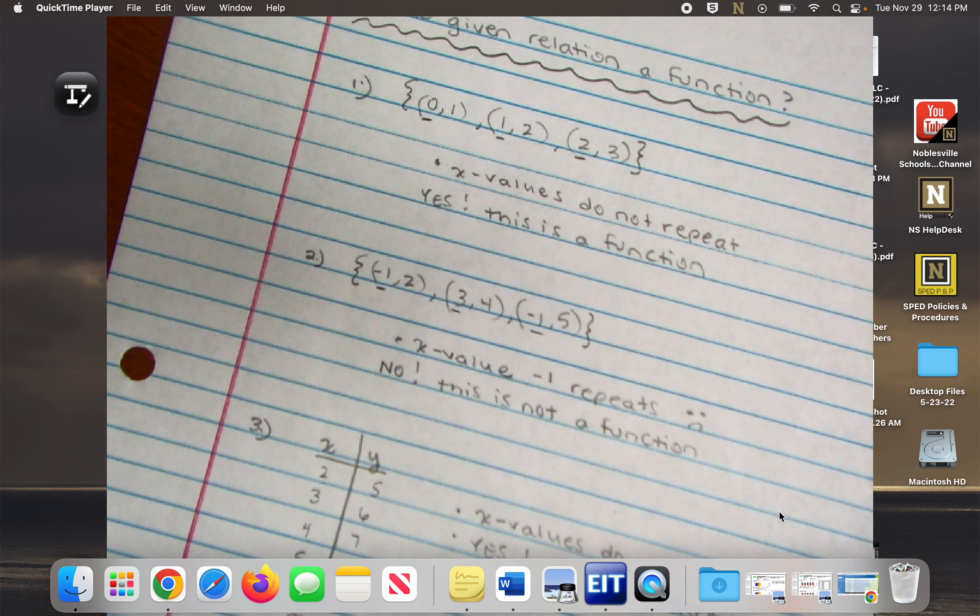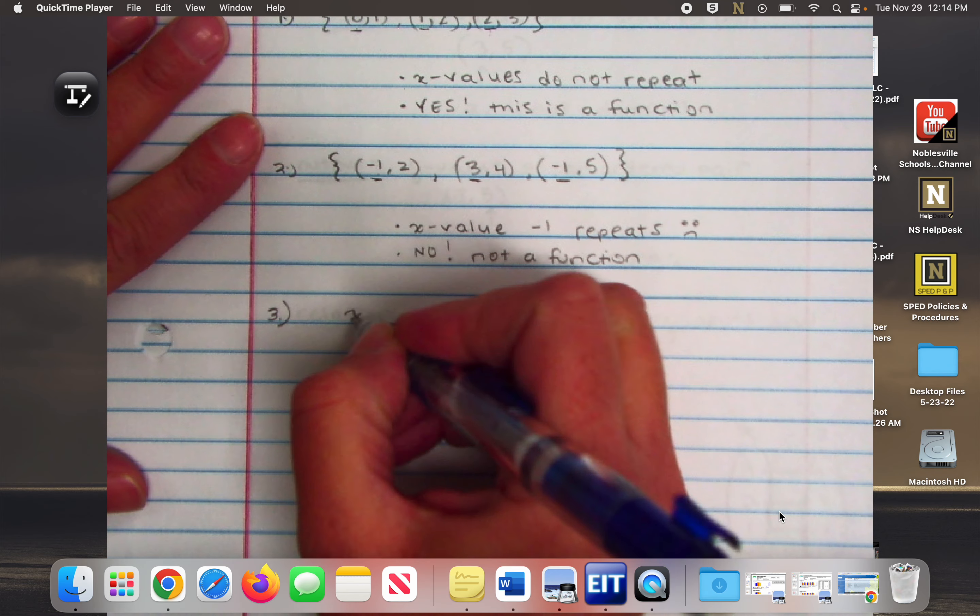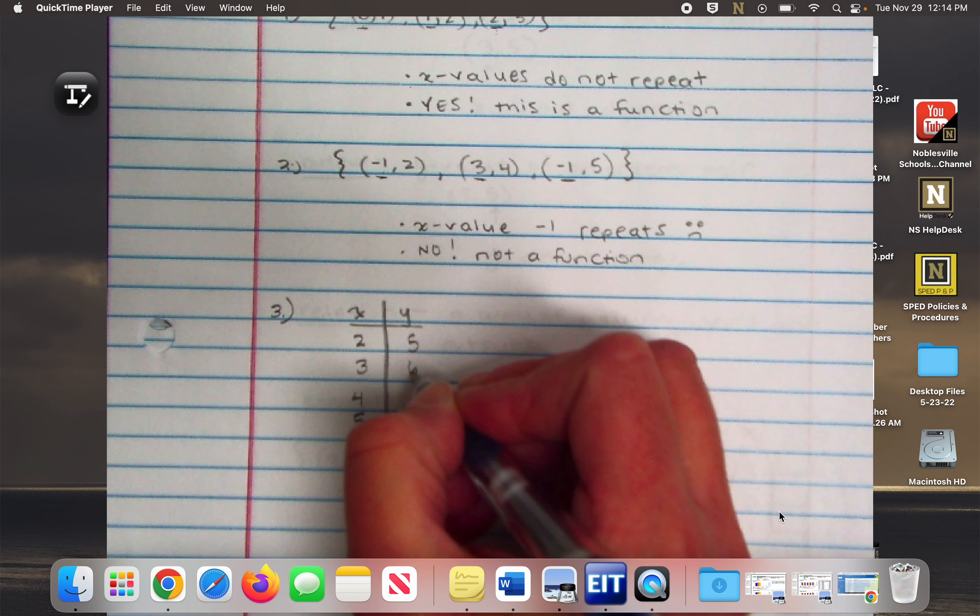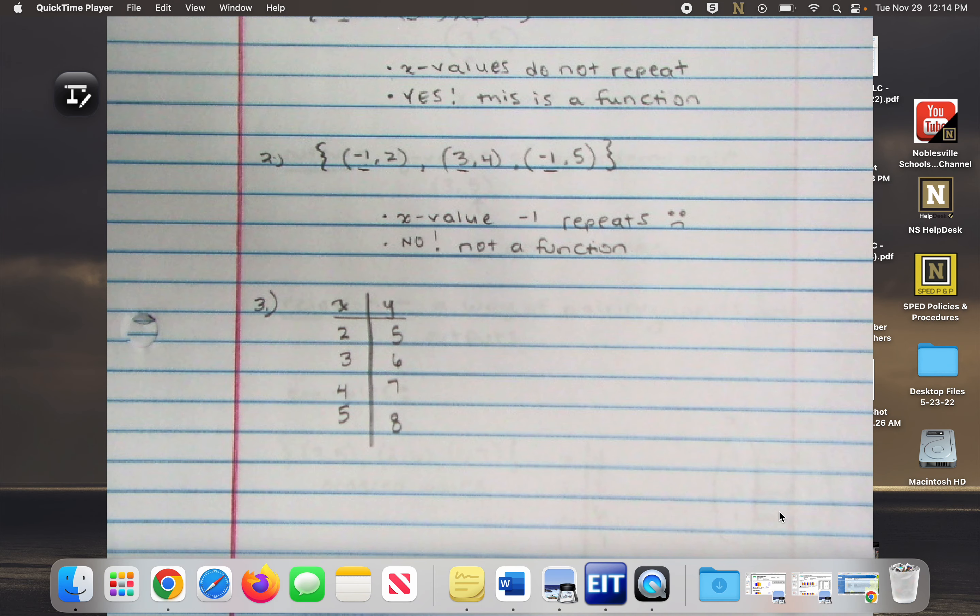So now we're going to do our third example. We're going to make a table of values. So when I look at this table of values and I focus in on the X values specifically, do any of these numbers repeat? No. So that means it is a function, right? As soon as one of those X values repeats, it's no longer a function. We are ignoring the Ys. The Ys don't matter to us right now. It doesn't matter that we have a five here and a five here.